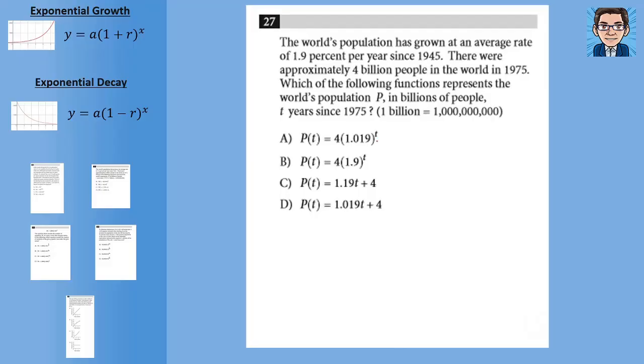Okay, here we have a population one. So world population has grown at an average rate of 1.9% per year. Again, that's right there. It tells us it's exponential growth. The starting point is 4 billion. And it asks you to do it in billions. And then t, again, is an unknown. It's just for t years. So let's just set up the equation.